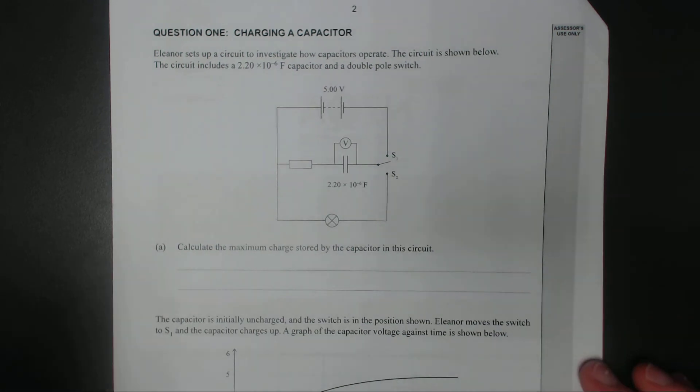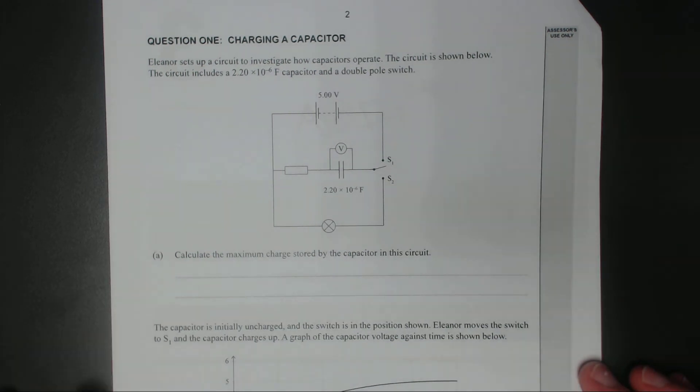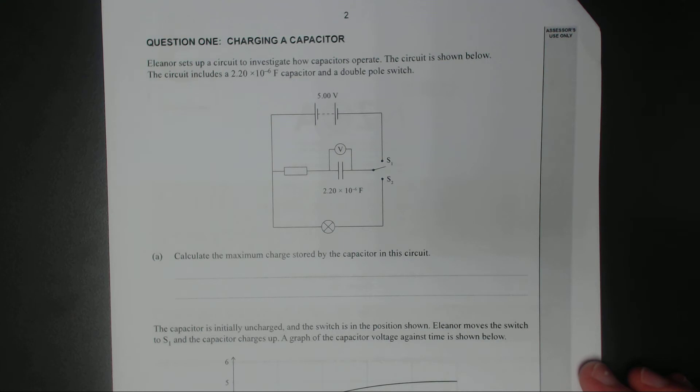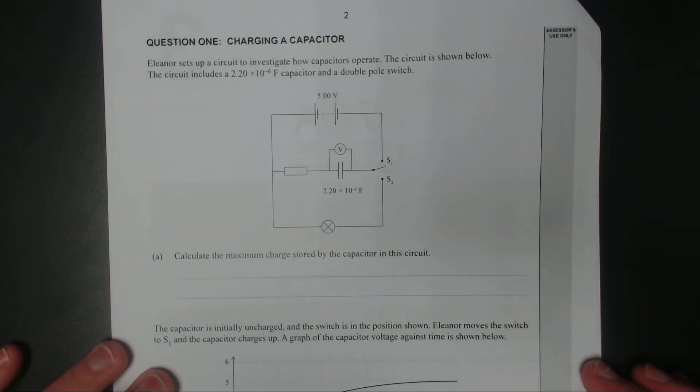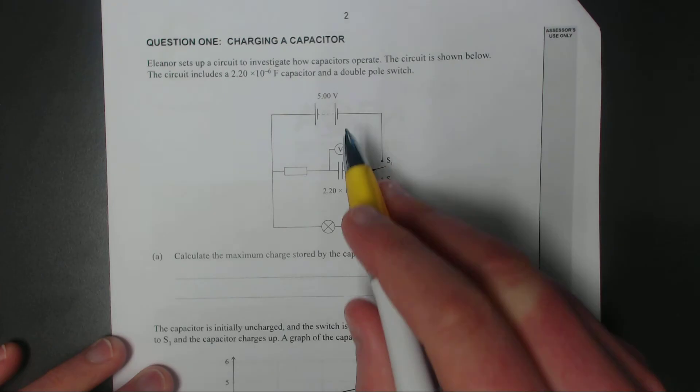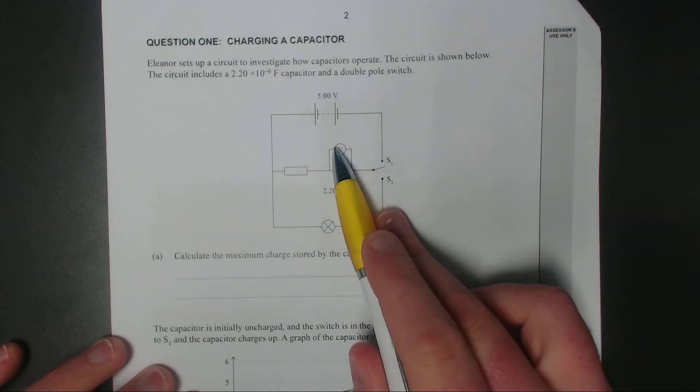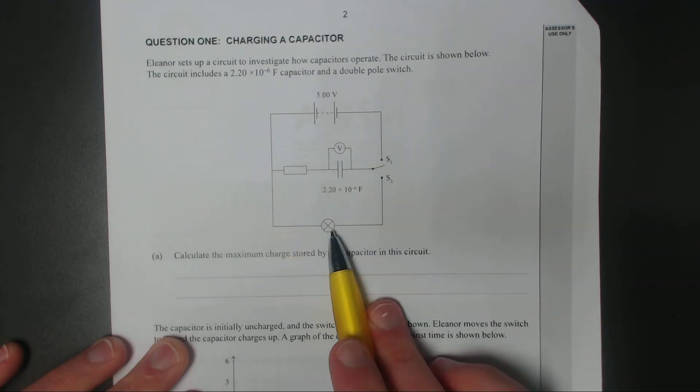Eleanor sets up a circuit to investigate how capacitors operate. The circuit is shown below. It includes 2.2 times 10 to the negative 6, so it's a 2.2 microfarad capacitor and a double pulse switch. So here's the battery if you can see it. Here's the capacitor with a voltage meter above it. We've got a resistor and we've got a lamp.